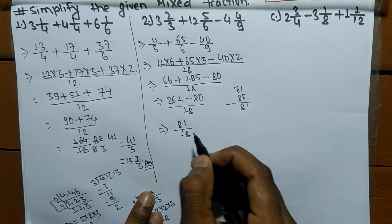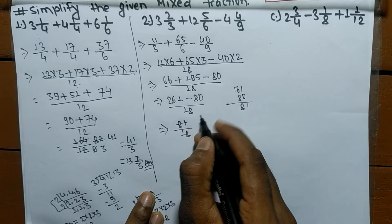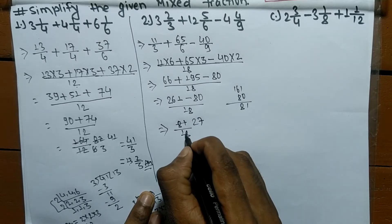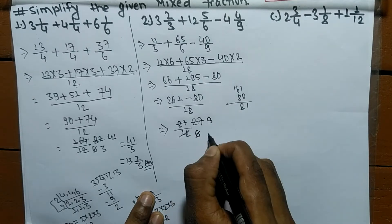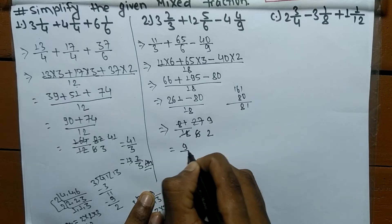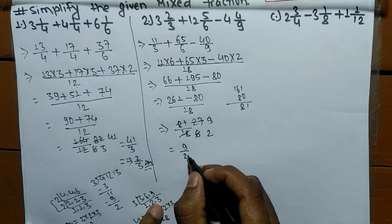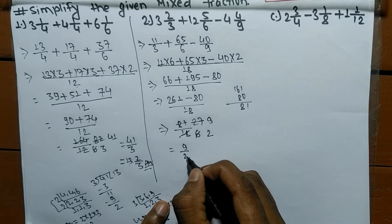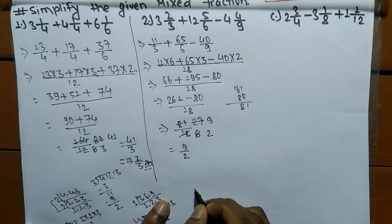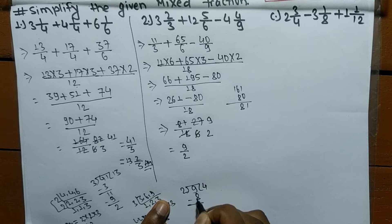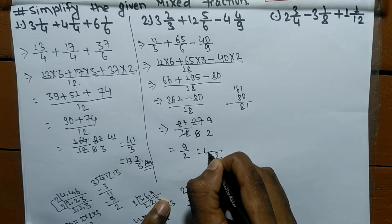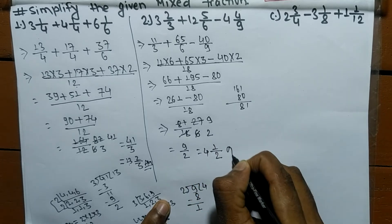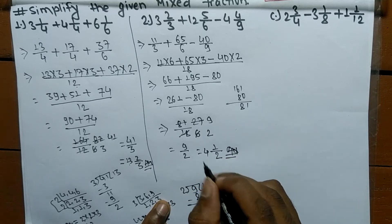We can cancel 81 by 18 by 3: 3 times 27 means 81 and 3 times 6 means 18, giving 27 by 6; again cancel by 3: 3 times 9 means 27 and 3 times 2 means 6, so we get 9 by 2. Converting to a mixed fraction: 2 times 4 means 8, and 9 minus 8 means 1 remainder. So the answer is 4 whole 1 by 2.